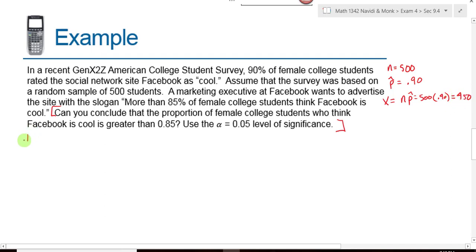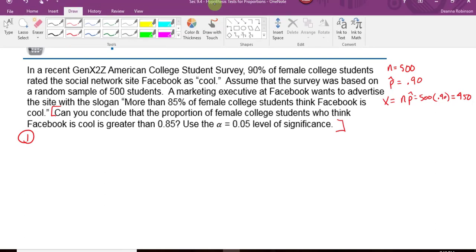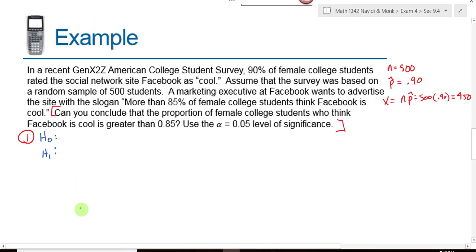We begin by writing our null and our alternative hypotheses. What will we use for our parameter now? Is it still the mean? No, it's a proportion. Our parameter will be P. P equals—they want to claim that the percentage of people that think Facebook is cool is greater than 0.85. That's what we put here. Greater than means greater than 0.85.